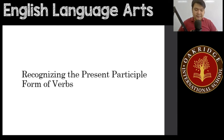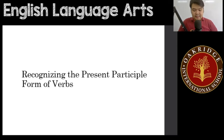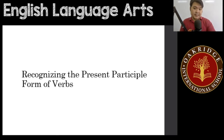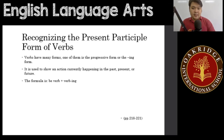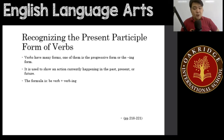Verbs have different forms, as was already discussed before. These forms are different ways of spelling the verbs, and at the same time, these are different ways of using the verbs as well. One of these forms would be the present participle form, which is the progressive form or the -ing form.